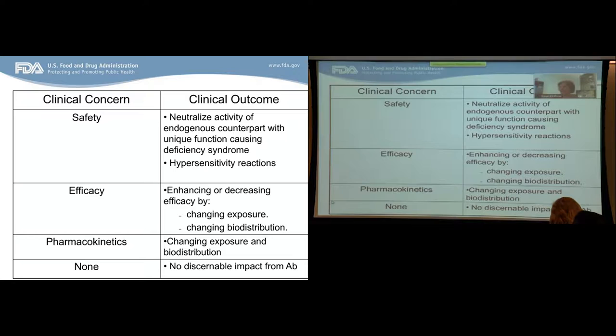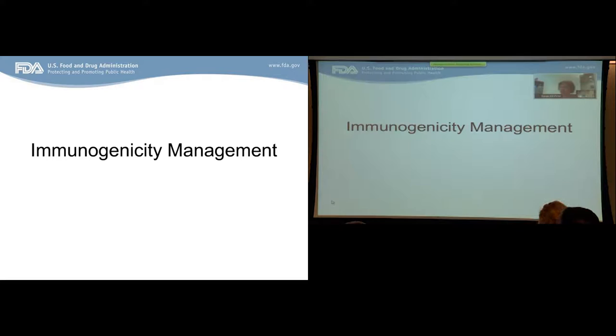Anti-drug antibodies may also impact the efficacy of a therapeutic protein. They may either enhance or decrease efficacy by changing exposure or changing the biodistribution of the product, and by the same mechanism they may also impact both the pharmacokinetics and pharmacodynamics of a product. For the most part, though, what we've seen is that anti-drug antibodies actually don't have any discernible impact on therapeutic proteins.